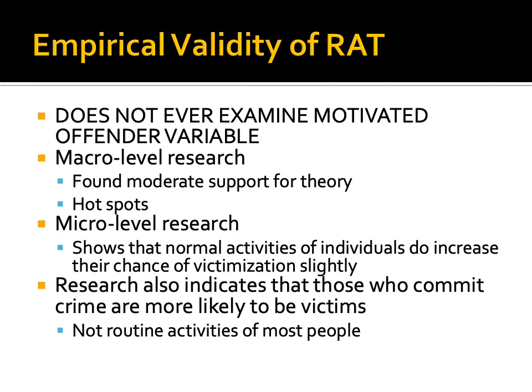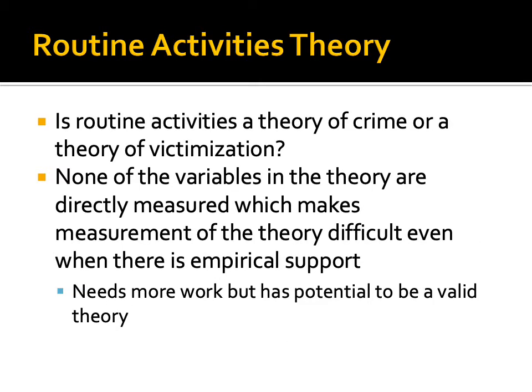It's probably not the best theory to explain criminal behavior. I like this theory a lot in terms of its simplicity; however, the empirical validity really leaves something to be desired. Is this really a theory of criminal behavior? Not if we're not examining why the person is committing crime — it's really more of a theory of victimization. We're looking at why you're more likely to be victimized, not why someone is choosing to victimize. None of the variables in the theory are really directly measured, which makes measurement difficult even when there is empirical support. So it has potential to be a very valid theory, but there's still a lot of work that needs to be done.